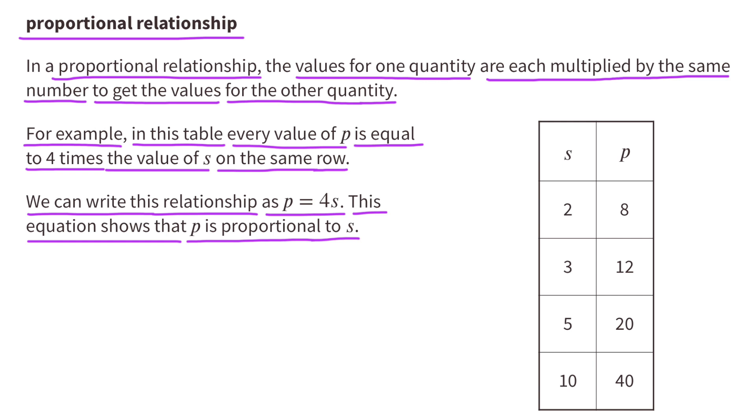The second important term that you should know is Proportional Relationship. In a proportional relationship, the values for one quantity are each multiplied by the same number to get the values for the other quantity.